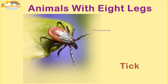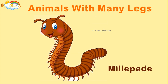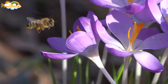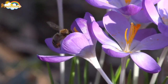Other animals such as scorpion and ticks also have eight legs. Now we are going to learn about animals with many, many legs. Who are they? Centipede and millipede have many legs. Now my little friends know the animals with different numbers of legs!